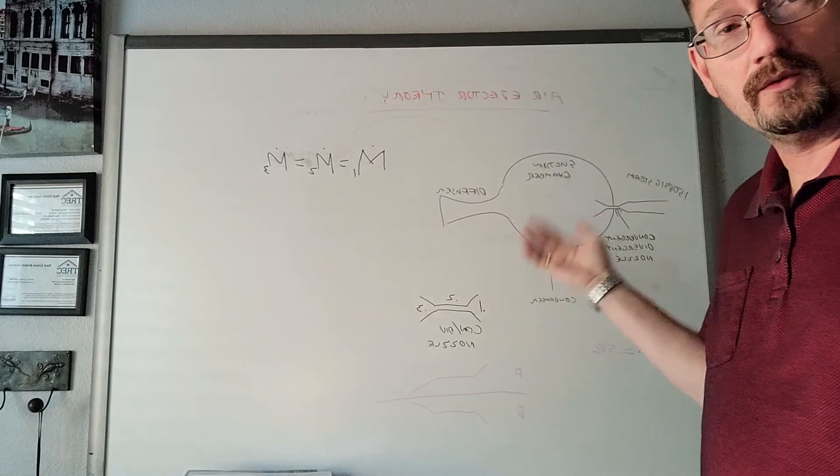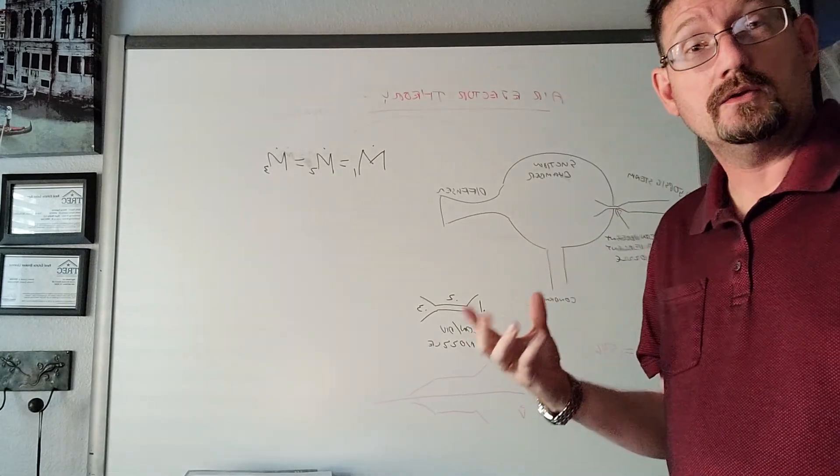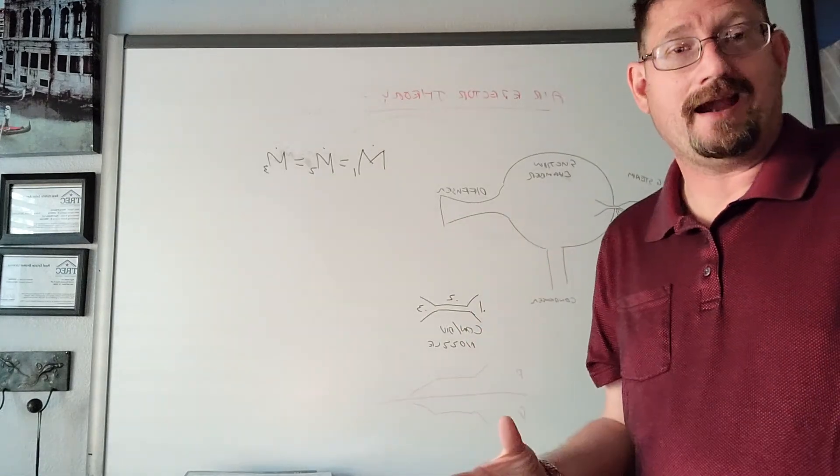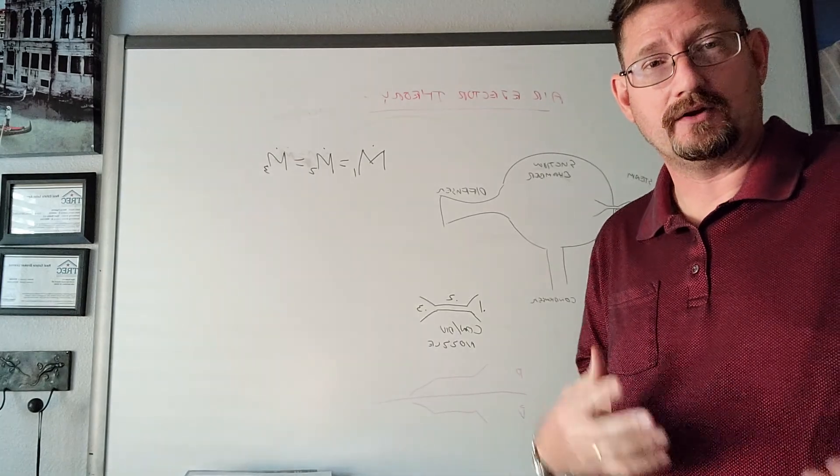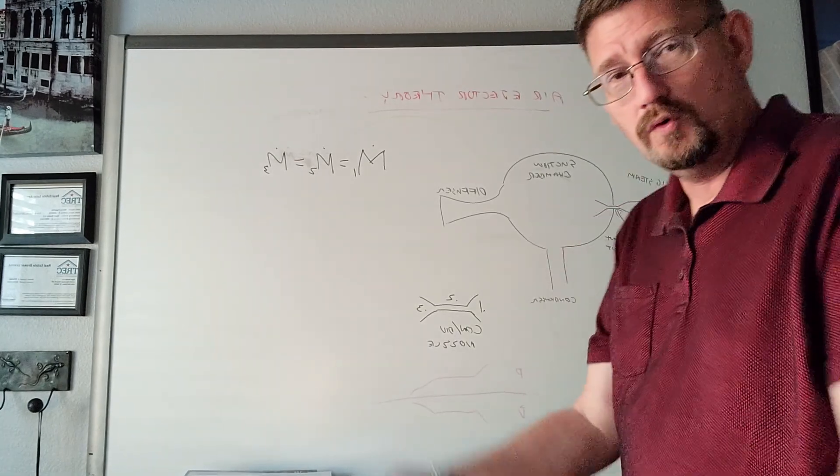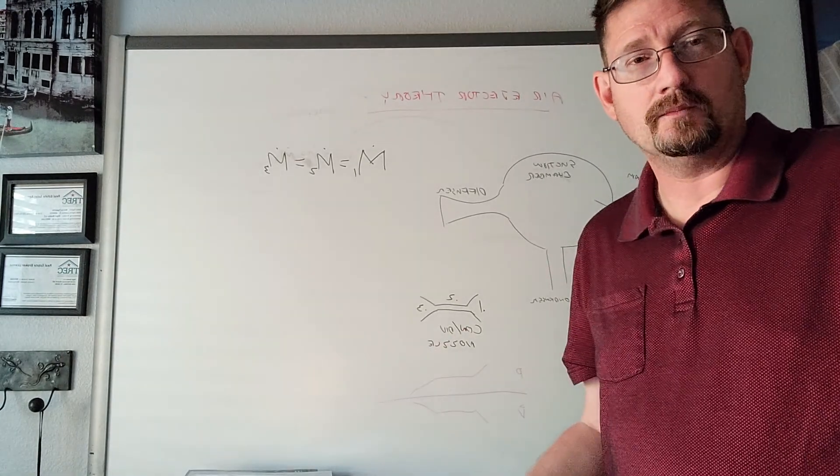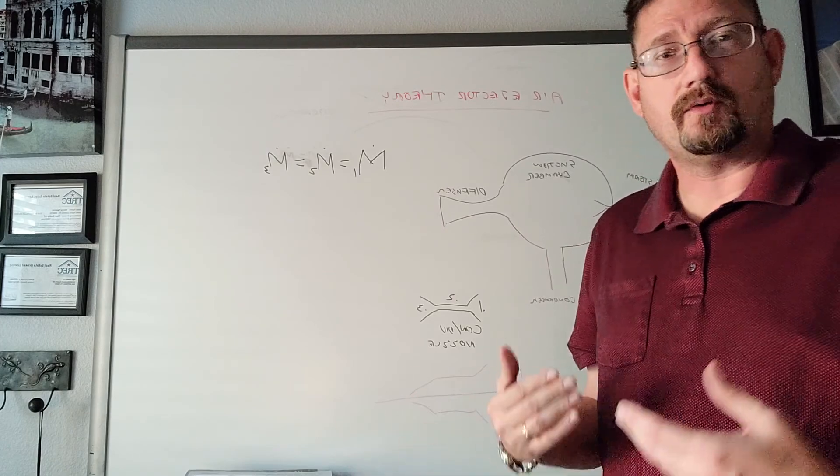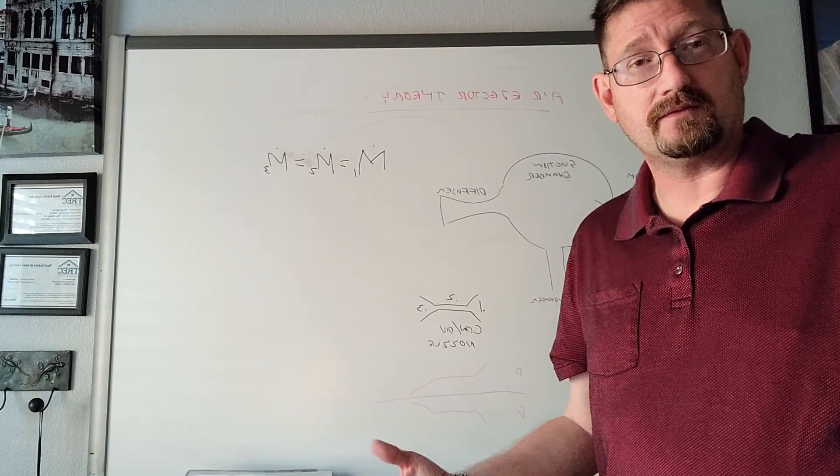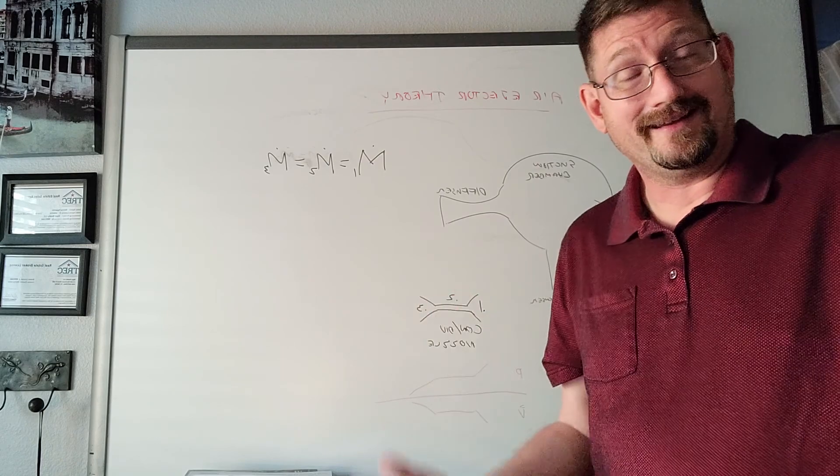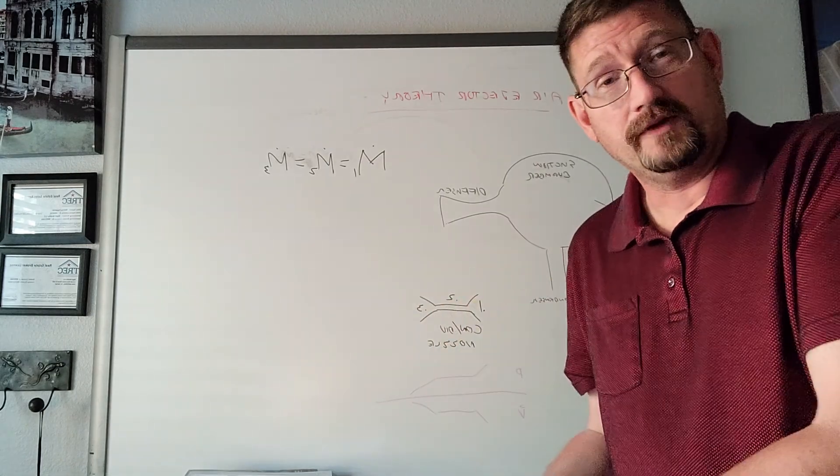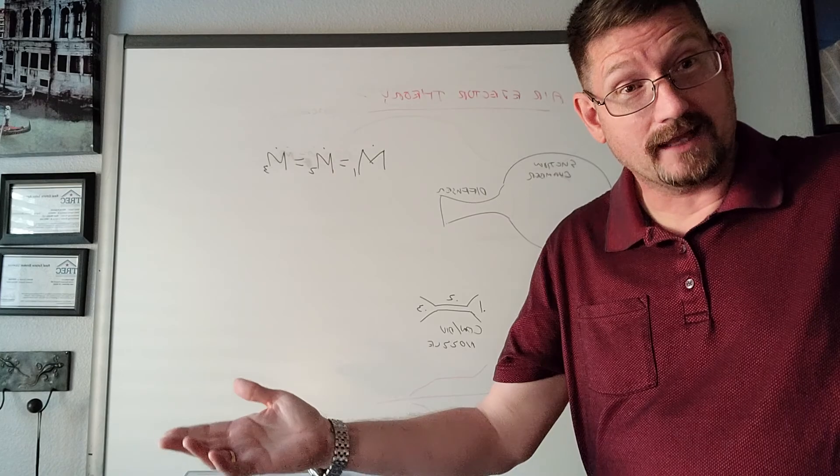For our system, a steam jet air ejector, we use steam to molecularly entrain any air and non-condensable gases in our condenser and remove them, which creates a vacuum. This vacuum is necessary for more efficient operations of our reactor plant, and we like efficiency because more efficient means more money.